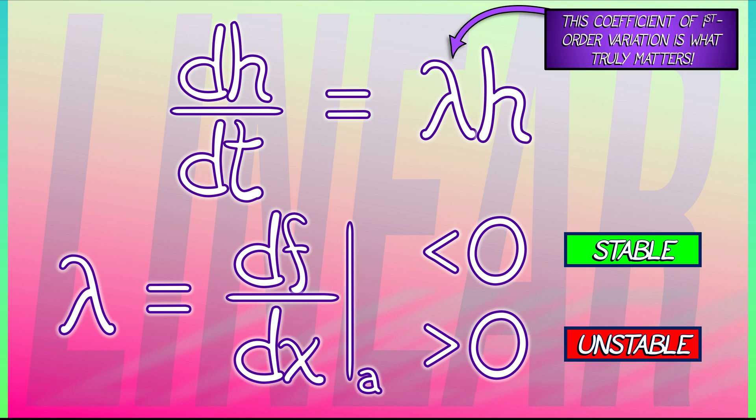And hopefully it's not zero because we really don't want linearization to fail. That's it. That's our stability criterion for equilibria in nonlinear first order ODEs.